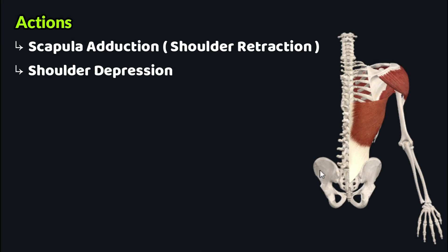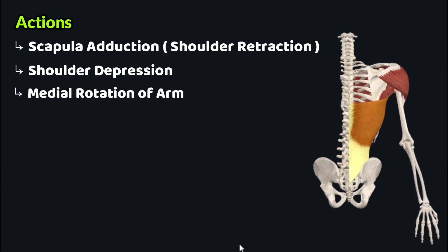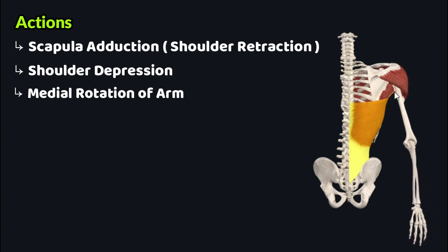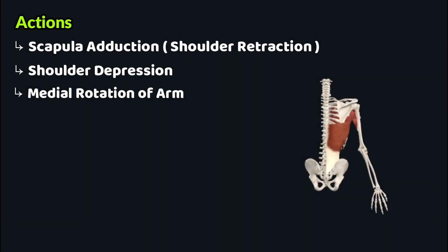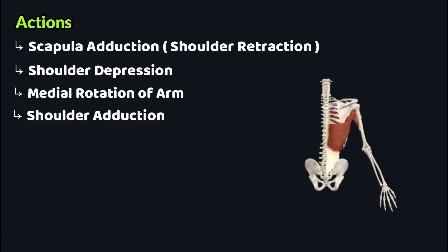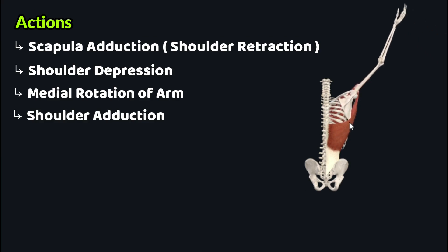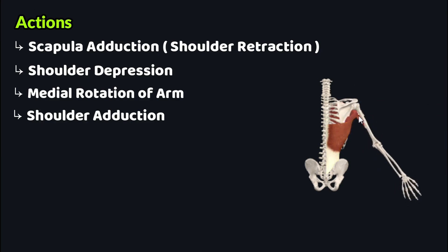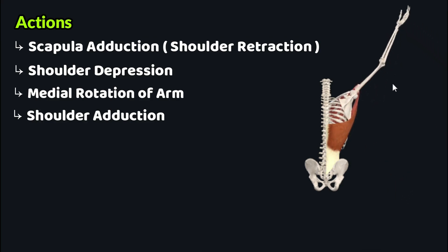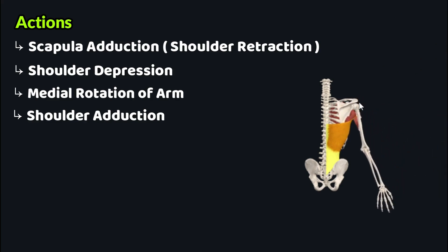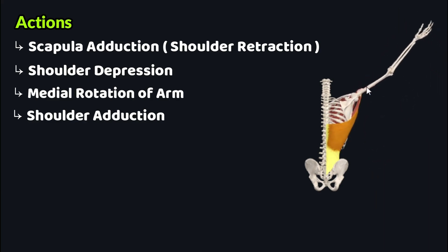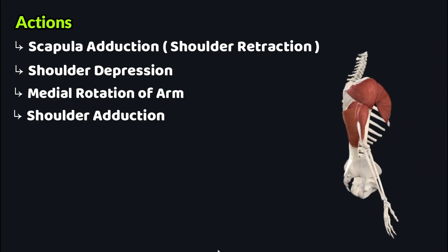When the latissimus dorsi acts through its flat tendon of insertion on the proximal humerus, it medially rotates the arm. The fourth action is shoulder adduction — the muscle acts on the proximal part of the humerus and draws it toward the thorax, decreasing the angle between the arm and the thorax.